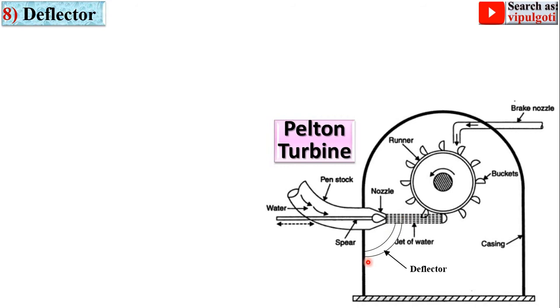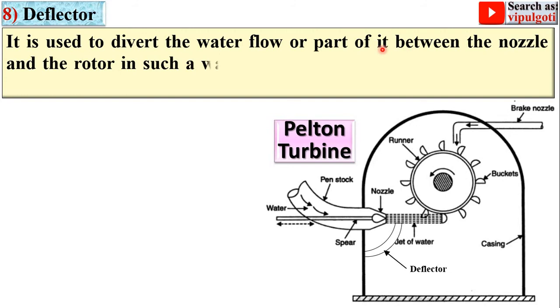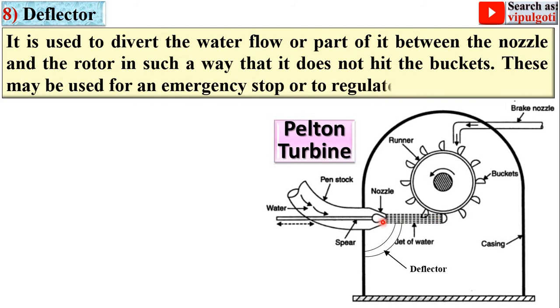Next, the last one: the deflector. It is used to divert the water flow, or part of it, between the nozzle and the rotor in such a way that it does not hit the buckets. These may be used for an emergency stop or to regulate the turbine.